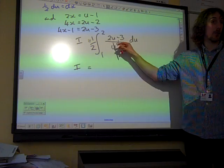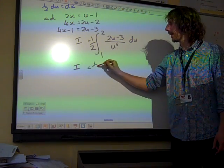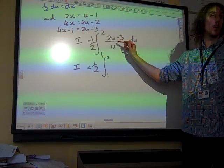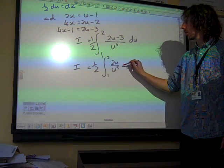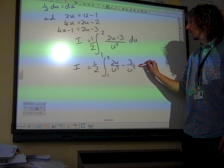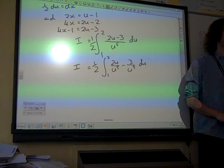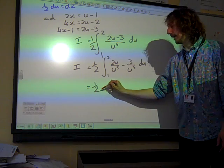We would split up the fraction. We would think of it being 2u over u to the 5, minus 3 over u to the 5, du. Now, you might not have needed to put that line in.